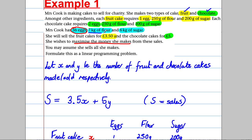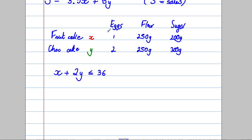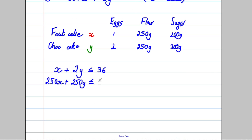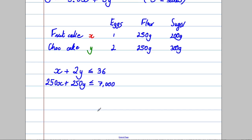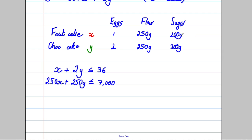She has seven kilograms of flour, which is 7,000 grams. Each fruit cake uses 250 grams and each chocolate cake uses 250 grams, so: 250x + 250y ≤ 7000. She also has six kilograms of sugar (6,000 grams). Each fruit cake uses 200 grams and each chocolate cake uses 300 grams, giving: 200x + 300y ≤ 6000.